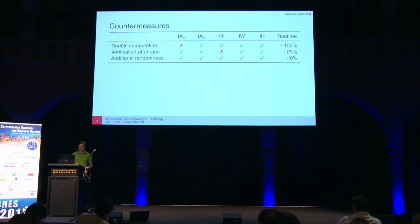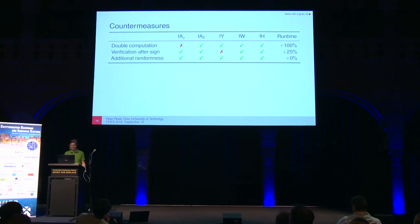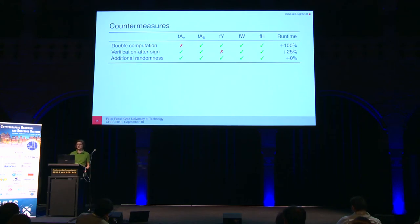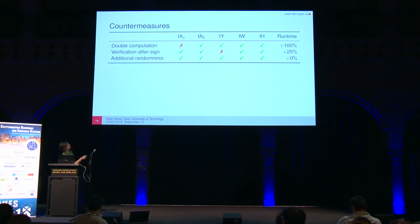Now that we have the attack, we can think about countermeasures. The first generic countermeasure is double computation, which doubles the runtime. To attack double computation, you need to either inject the same fault twice, or exploit a permanent fault such as manipulating the seed.